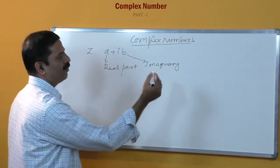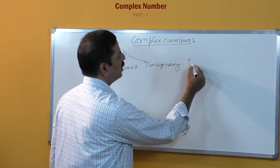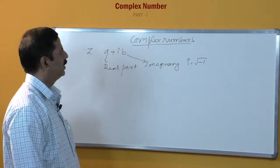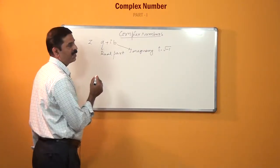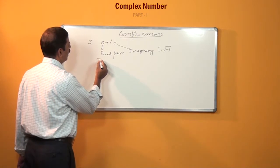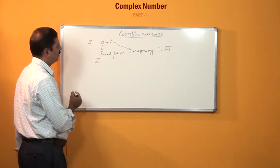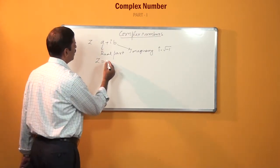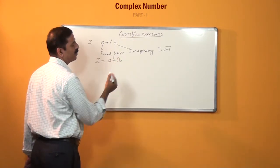The value of i is the square root of minus 1. A complex number is generally denoted by the alphabet z. Therefore, we can write z is equal to a plus ib.